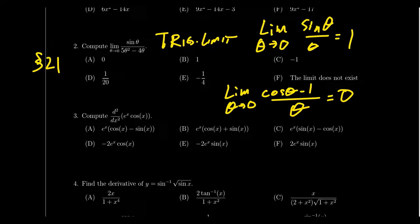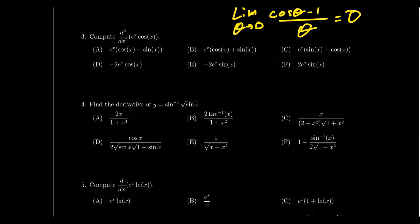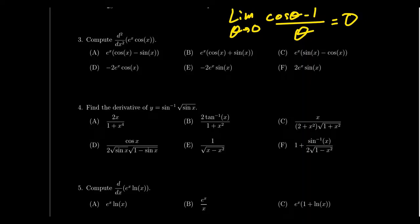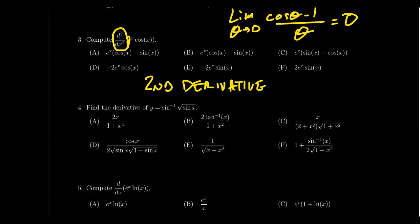Question number three asks you to compute a second derivative. For example, the function e to the x times cosine of x — you have to find the second derivative. The techniques necessary depend on the function: it could be the power rule, the product rule, derivatives of exponentials or logs. Calculating the second derivative means you take the derivative of the derivative, so make sure you take the derivative twice and apply whatever rules are necessary.